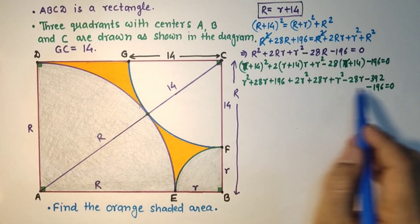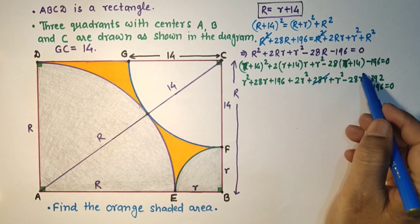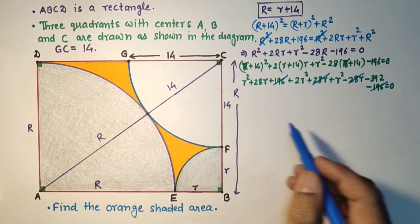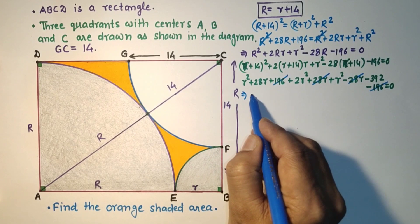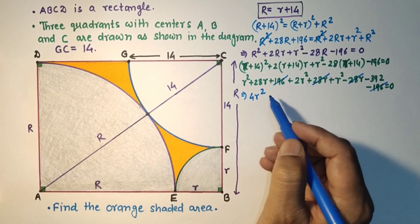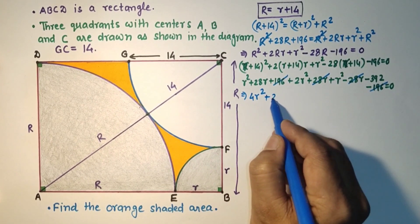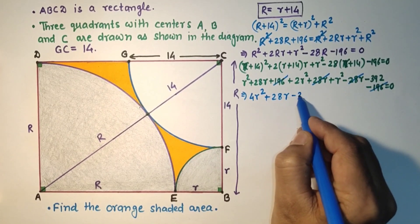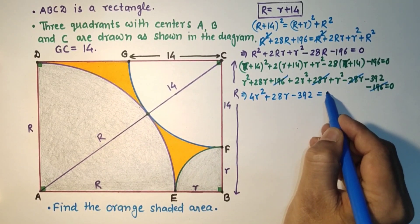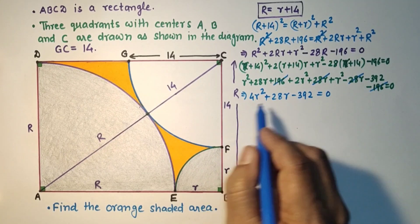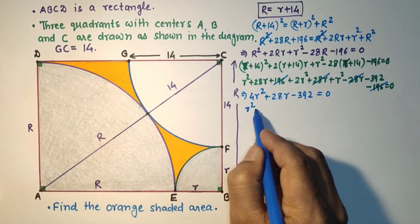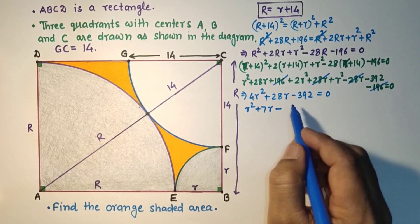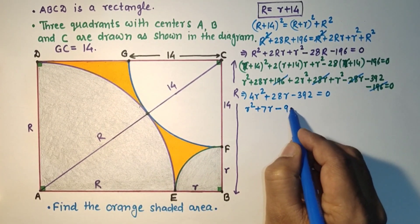After cancellations, we are getting 4r² + 28r + 28r − 392 = 0. So after dividing throughout by 4, we get r² + 7r − 98 = 0.